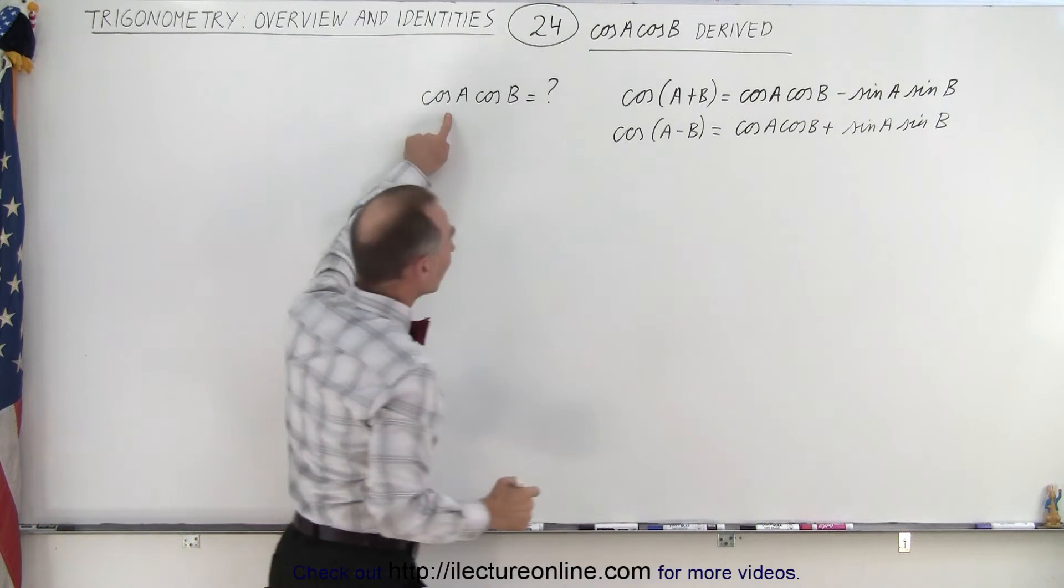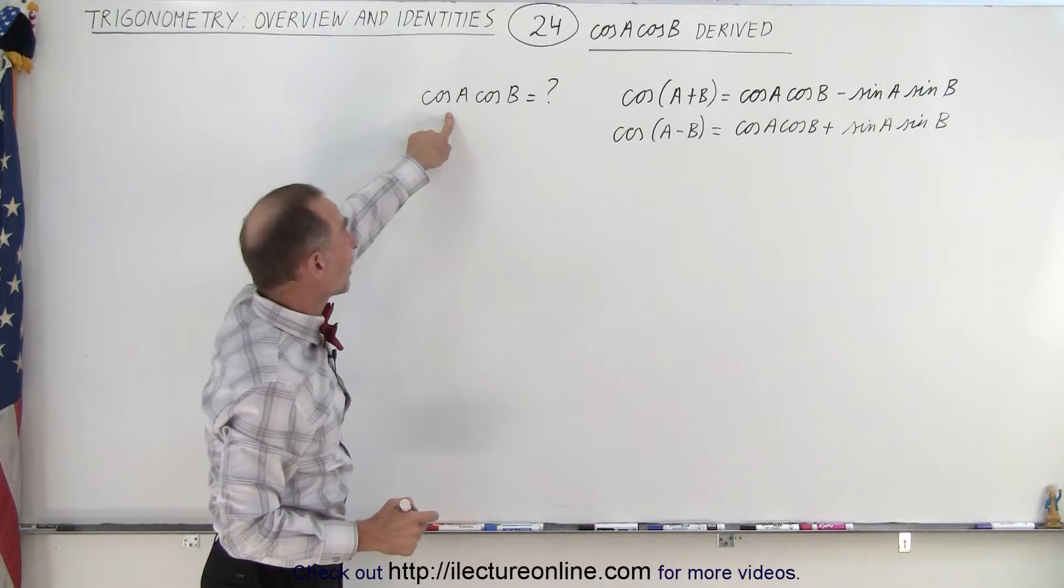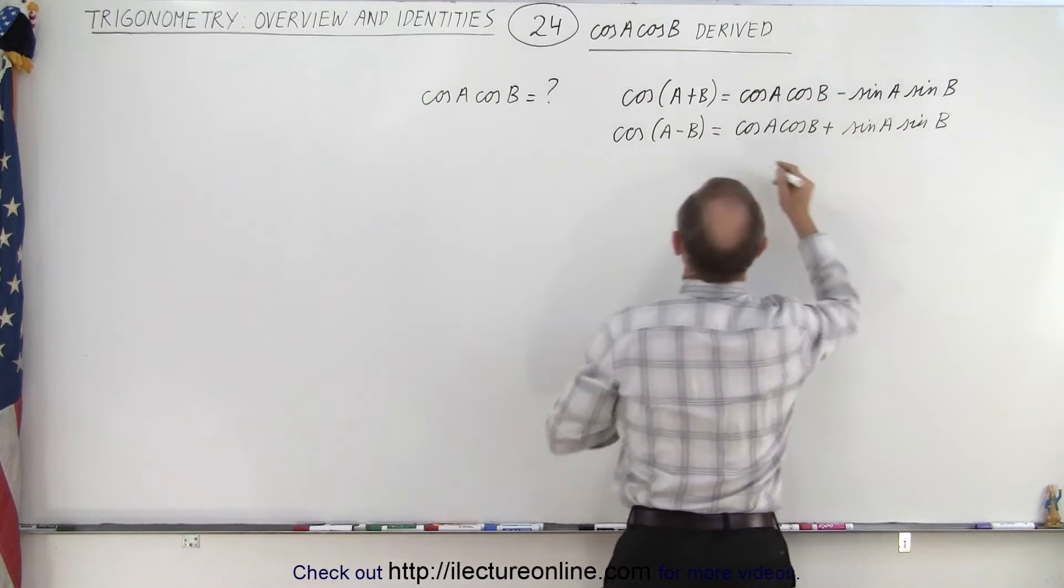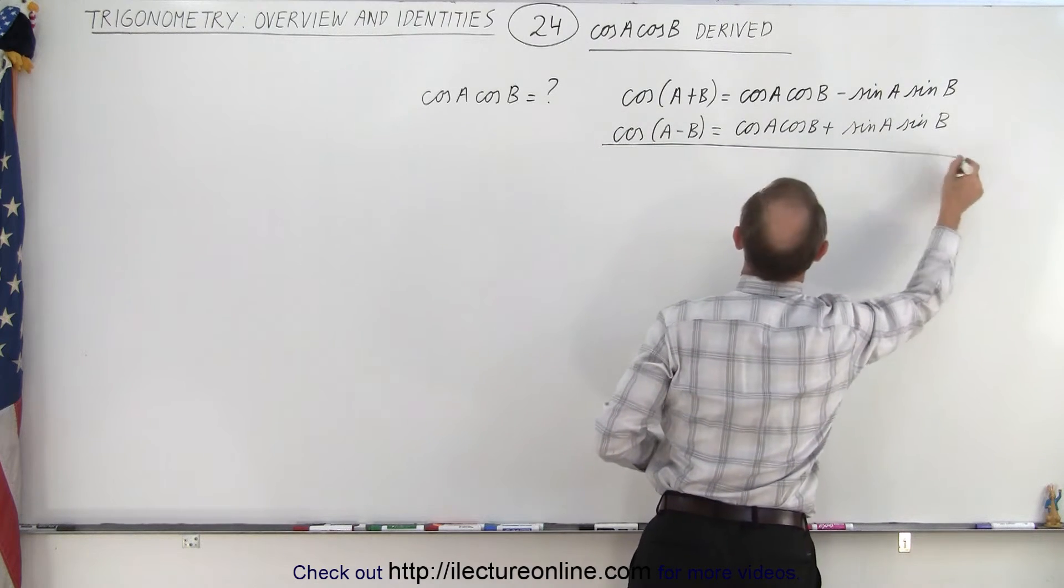Notice that now we want to maintain the cosine of A times the cosine of B and get rid of everything else. So that means we want to get rid of this and keep this. That means we're going to add these two equations together.